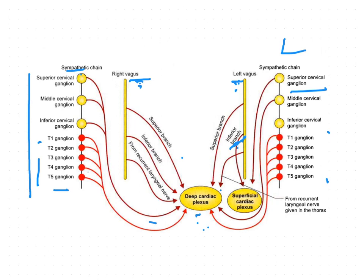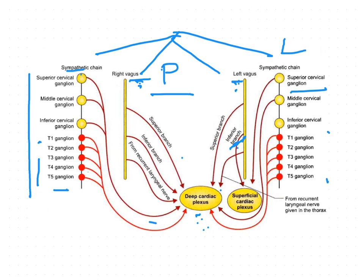In summary, the nerve supply is of two types: sympathetic and parasympathetic. The parasympathetic supply is via the vagus nerve and the sympathetic via the sympathetic chains. The branches forming the deep cardiac plexus include the superior cervical, middle cervical, inferior cervical ganglia, T1 to T5 thoracic ganglia, and branches of the right vagus.